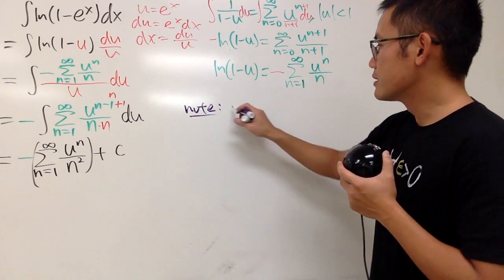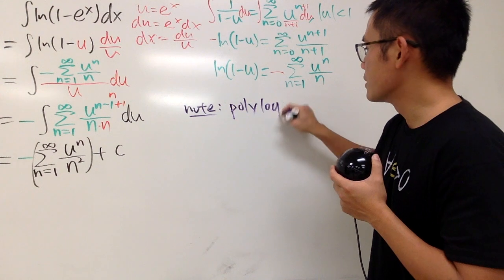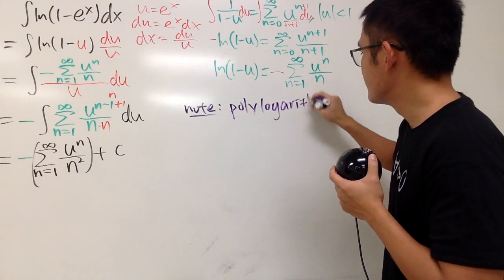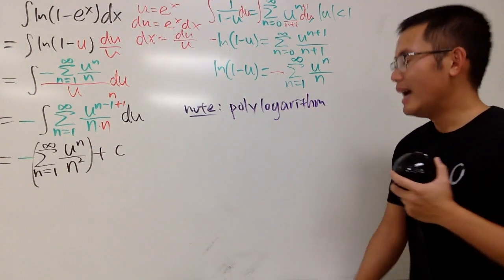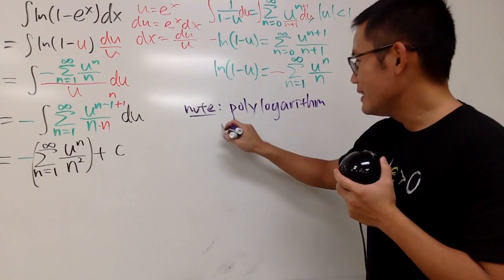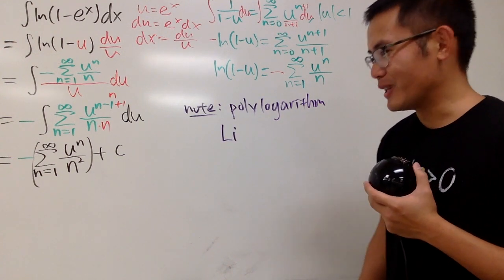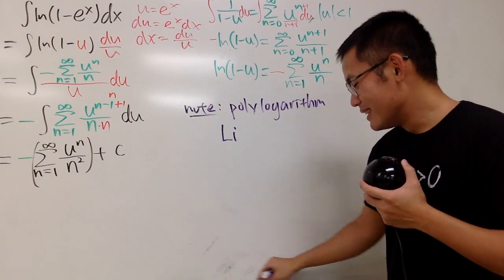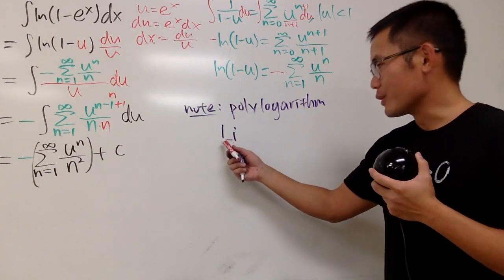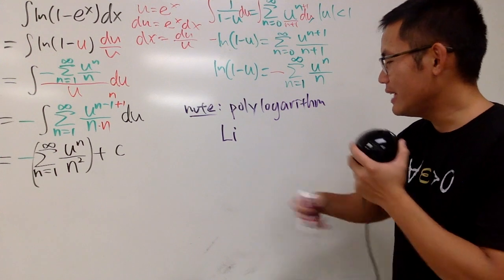This right here, it's called the polylogarithm. And let me just show you that this is li. I don't know why it's li, but it's just a notation. Just bear along, right? So, polylogarithm, the notation for that is li, and it has the index. The index, let's label that with s.